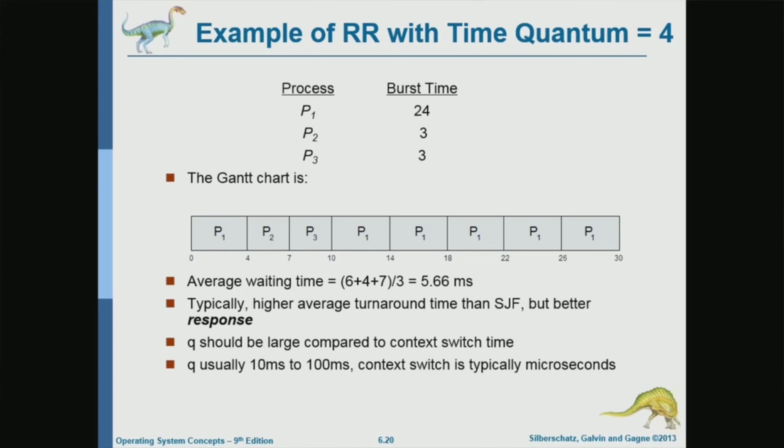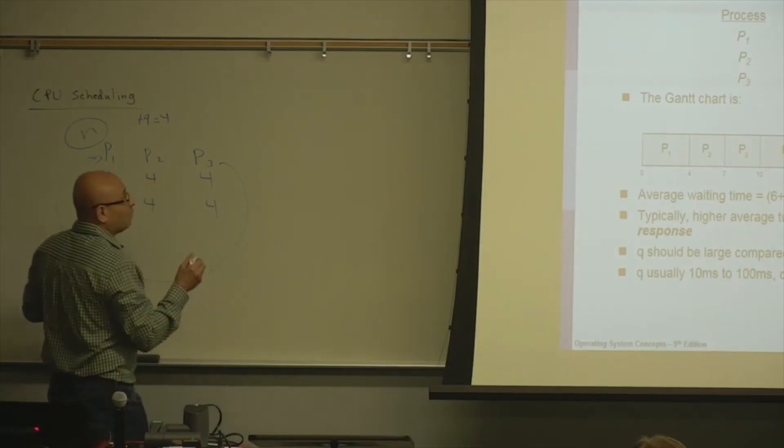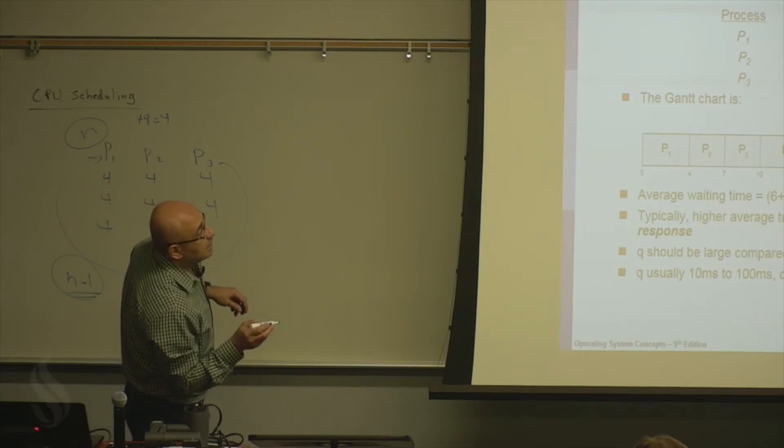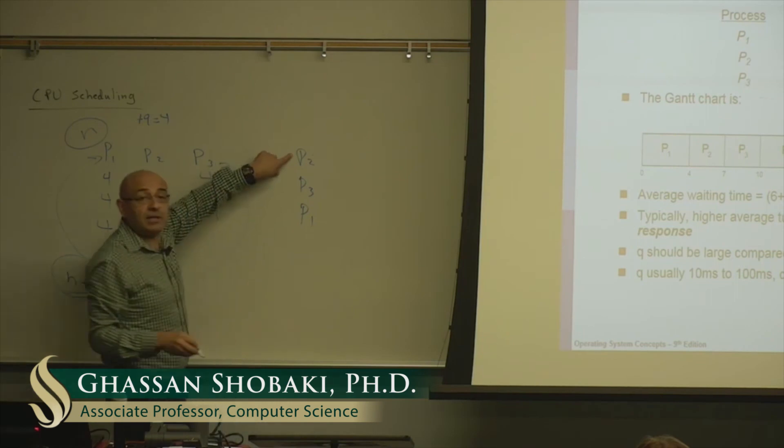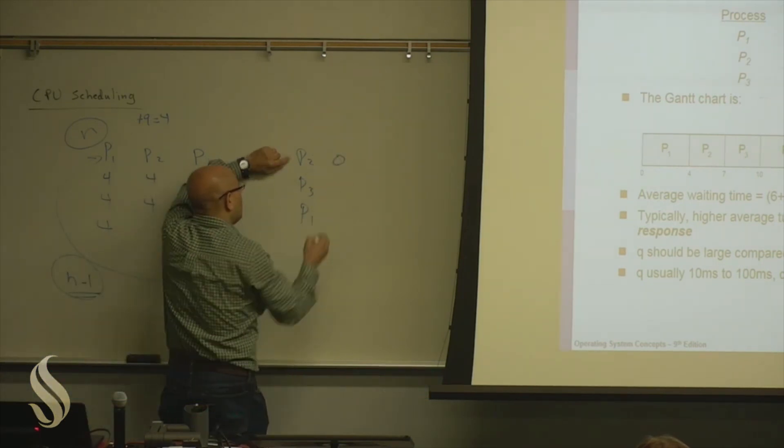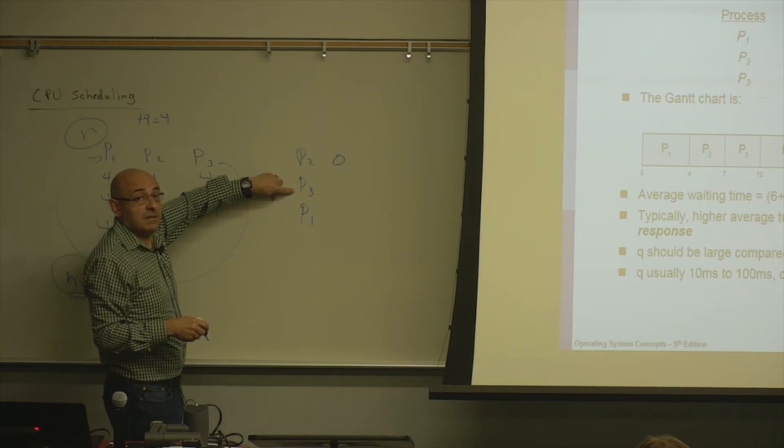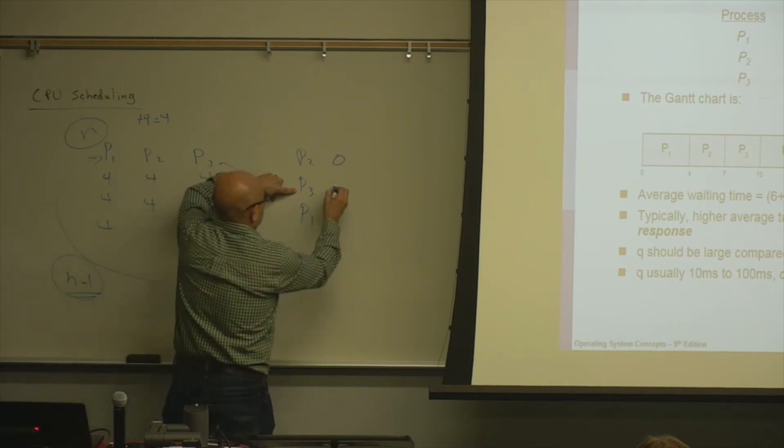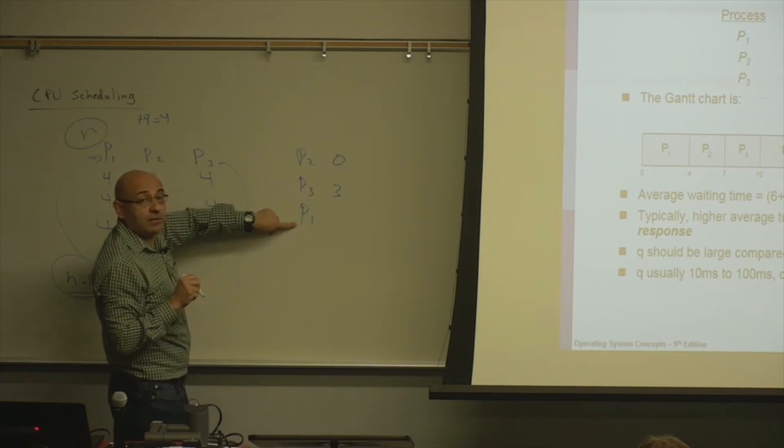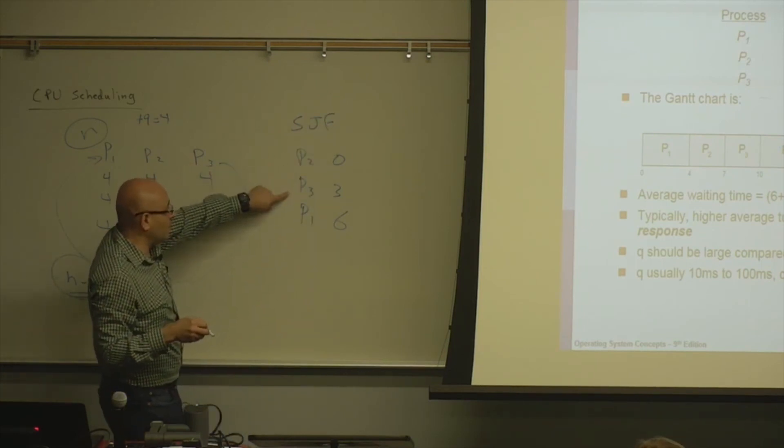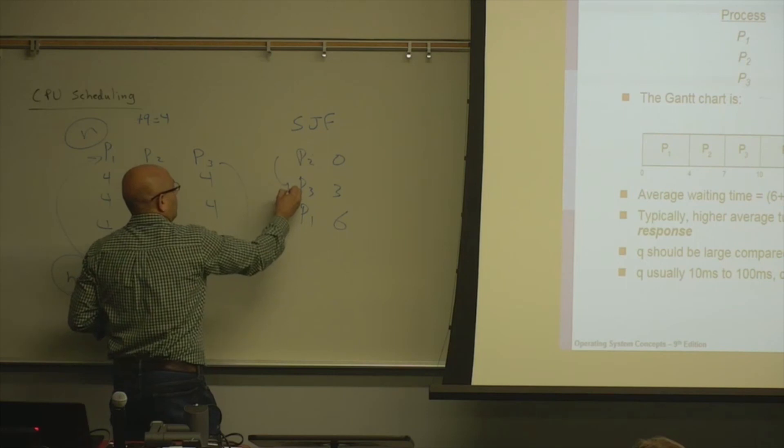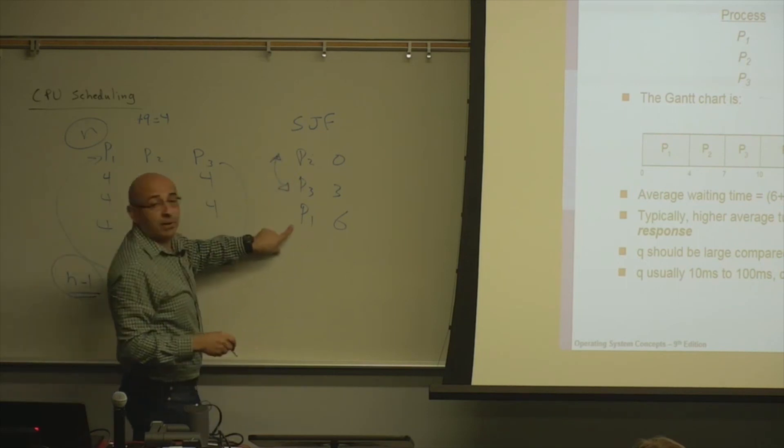Okay? Now, comparing this with shortest job first. If we do shortest job first, what will the order be in this case? It will be like P2, P3, P1, and P2 will wait for zero time. P3 will wait for three, and P1 will wait for six. So if you do shortest job first, P2 will wait for zero time, P3 will wait for three. Of course, these can be done in any order, either order. And P1 will wait for six.